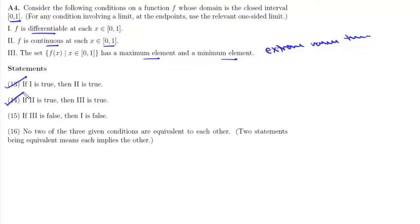Now 15th is: if third is false then first is false. When this function f doesn't have a maximum element or a minimum element or both, then basically this function f is discontinuous, and if it is discontinuous it is not differentiable.